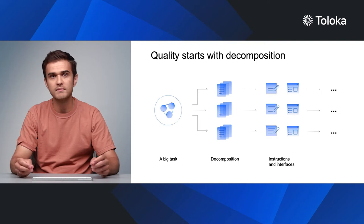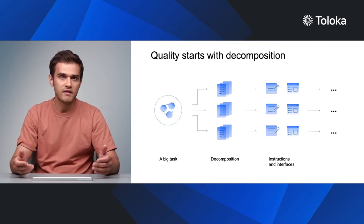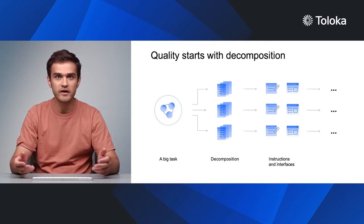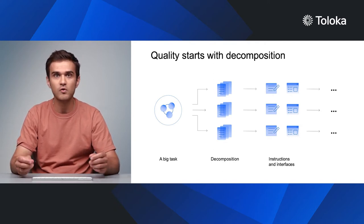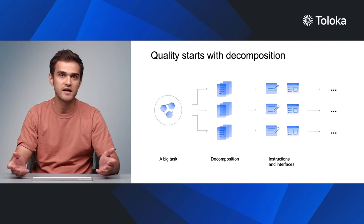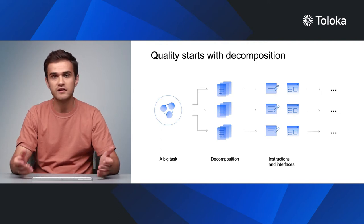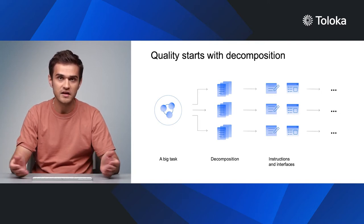Designing quality control is a multi-stage process. It starts with thinking through the task's logic and ends with smart aggregation of the results. The first steps involve breaking down the task, putting together good instructions, and designing a clear and usable interface. We discussed how to deal with these challenges in previous videos.